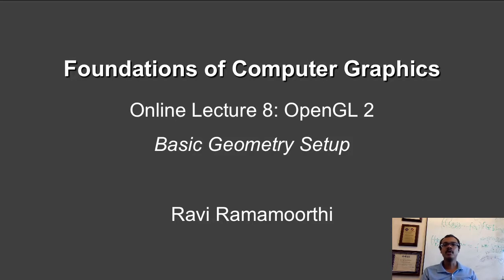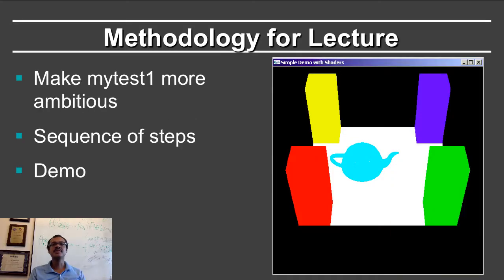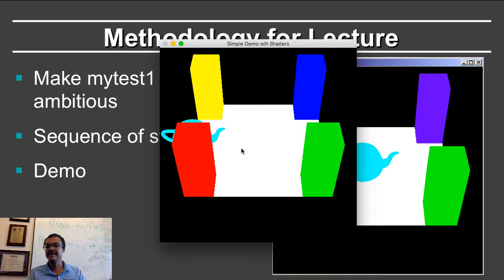In this lecture, we are going to talk more about OpenGL, making the MyTest1 program more complicated to introduce more functionalities. This segment talks about basic geometry setup. We'll start with the MyTest1 program and gradually add code through a sequence of steps. At the end of this lecture, we will have program MyTest2 with a teapot, four pillars, teapot animation, and finally texturing and lighting as well.